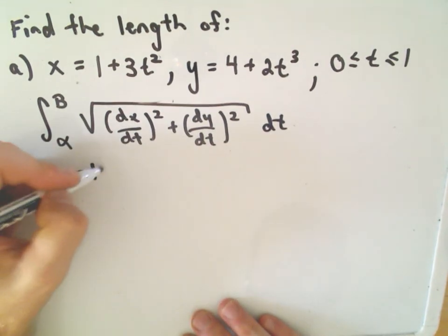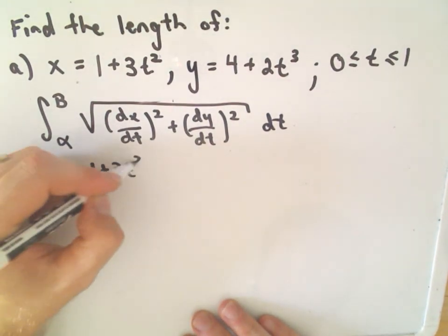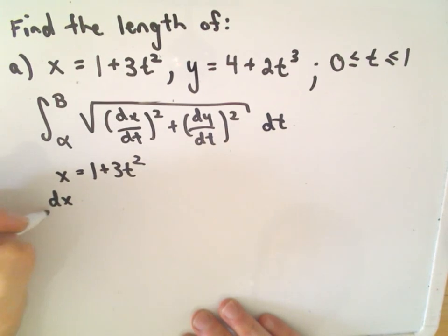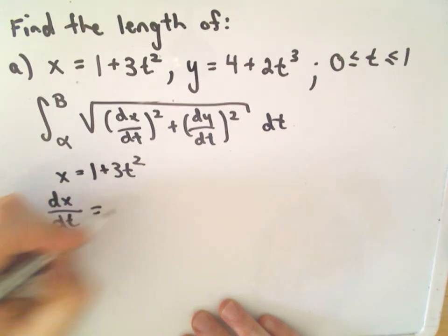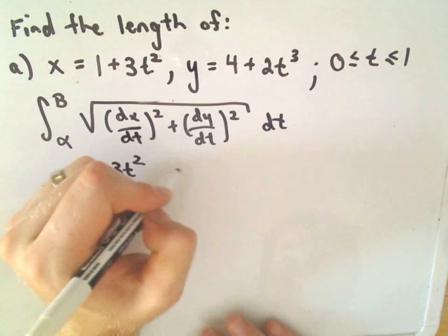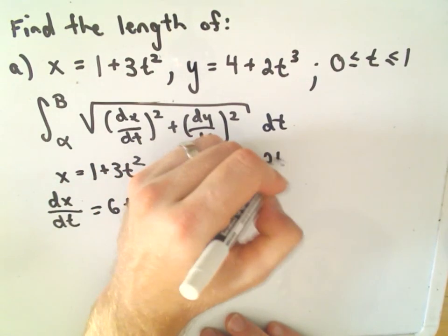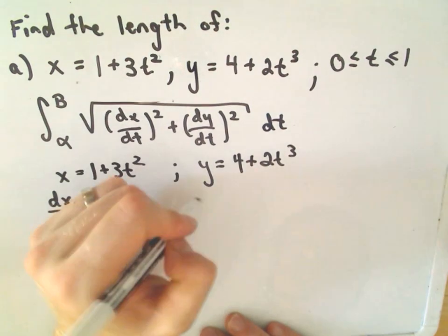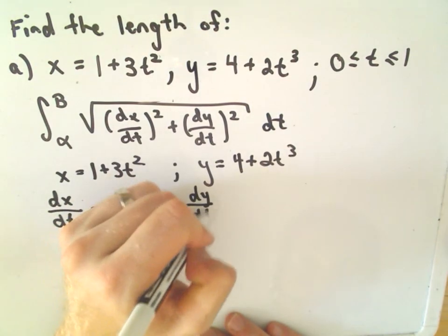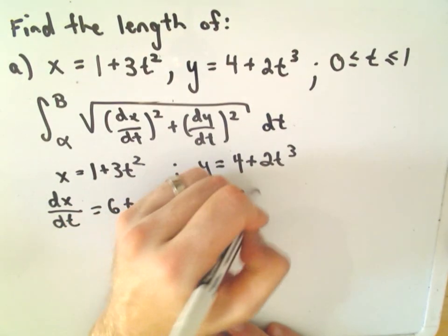So if x is 1 plus 3t squared, well the derivative of x with respect to t would simply be 6t. Likewise, if y is 4 plus 2t cubed, well simply the derivative of y with respect to t will be 6t squared.